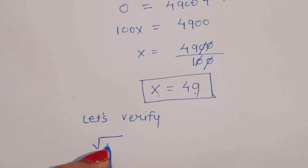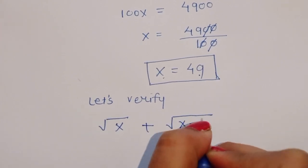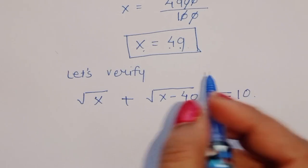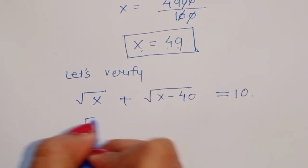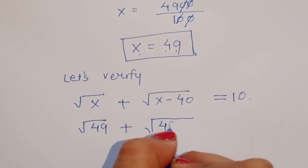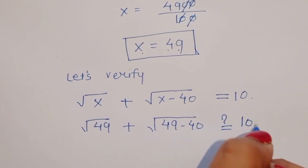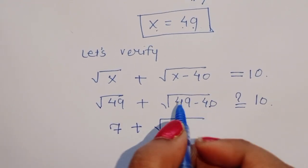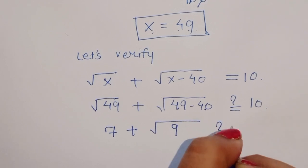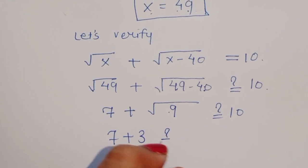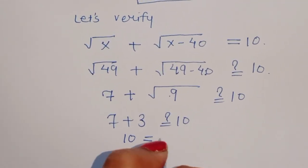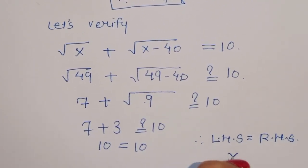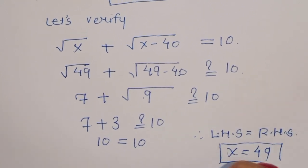Verification: the question is square root of x plus square root of x minus 40 equals 10. Substituting x equals 49: square root of 49 plus square root of 49 minus 40 equals 7 plus square root of 9 equals 7 plus 3 equals 10. LHS equals RHS, so x equals 49 is the correct solution.